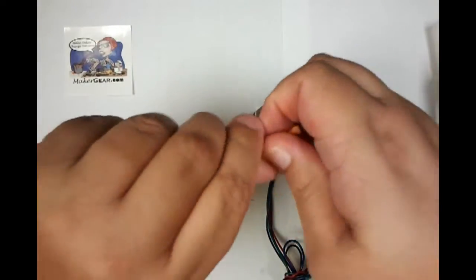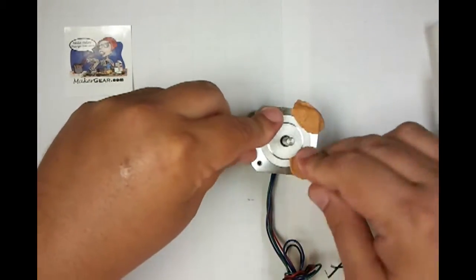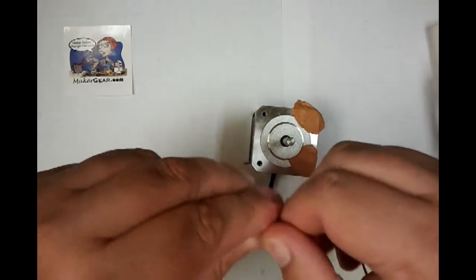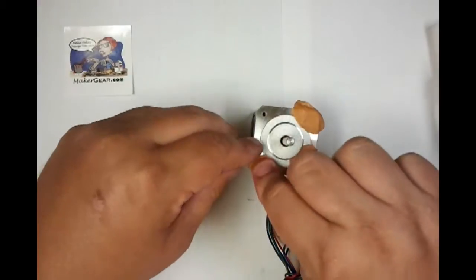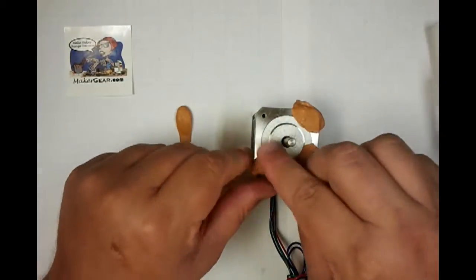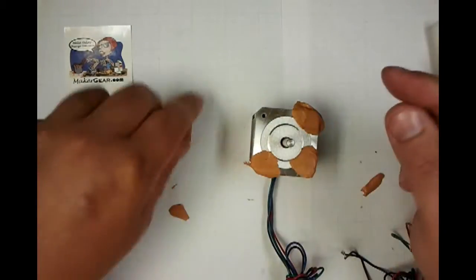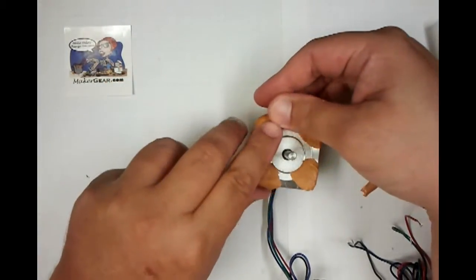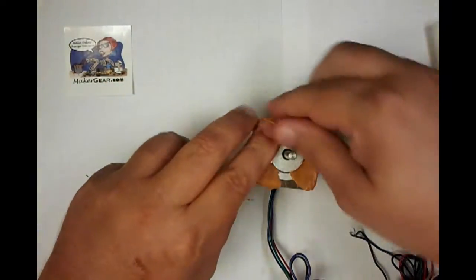You take your Play-Doh and you put it over the motor holes. I have never seen a stepper motor where the holes actually lead into the motor, but I always do this just in case I get that one motor that they do. So jam all those full of Play-Doh.